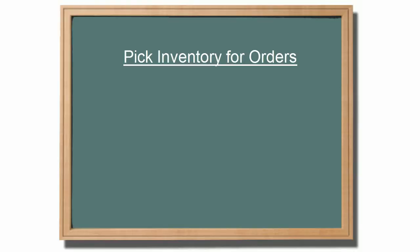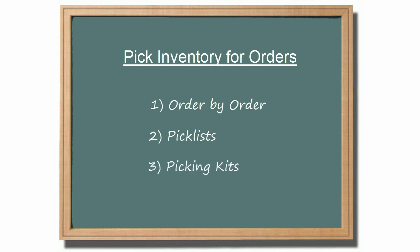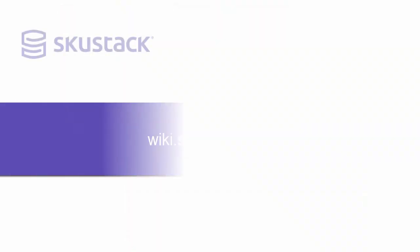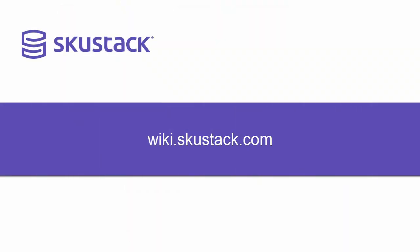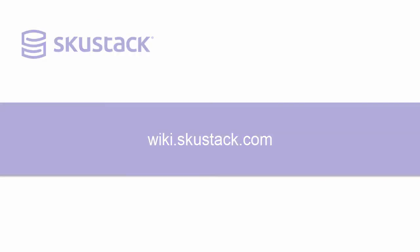To sum it up, there are three methods offered in SkewStack for picking: order-by-order picking, picking from a picklist, and picking kits. For more information on picking orders in SkewStack, please visit wiki.skewstack.com.